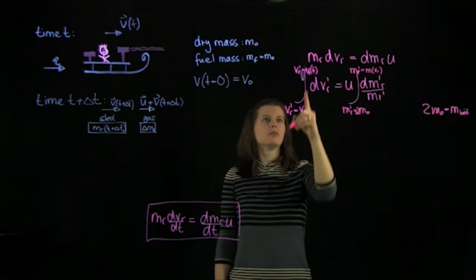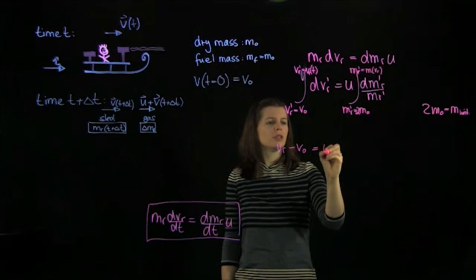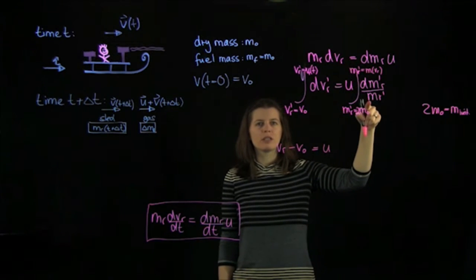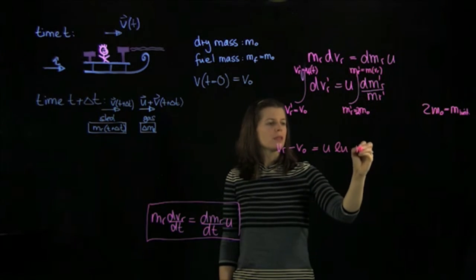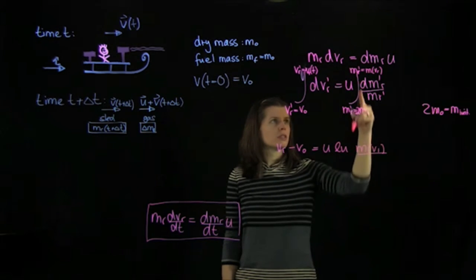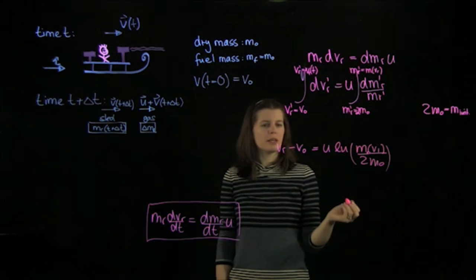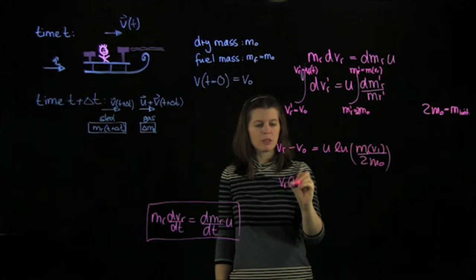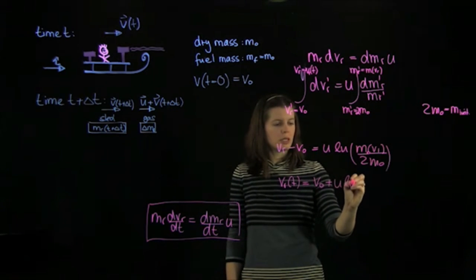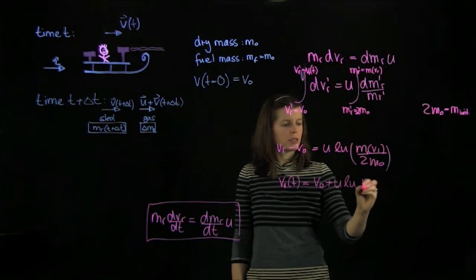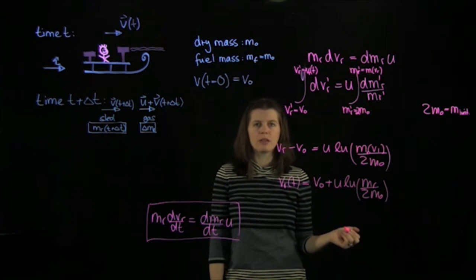So let's do that. We're going to get vr minus v0 equals u 1 over m. Integrated gives us an ln. So ln. And then we can immediately do this here over 2m0. And we ultimately want this. So this is vr of t, of course. And then we get v0 plus u ln mr over 2m0. And that is our equation.